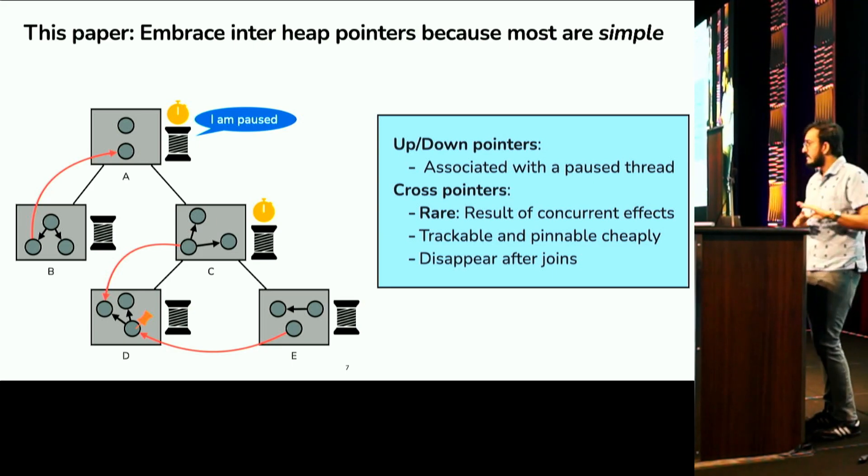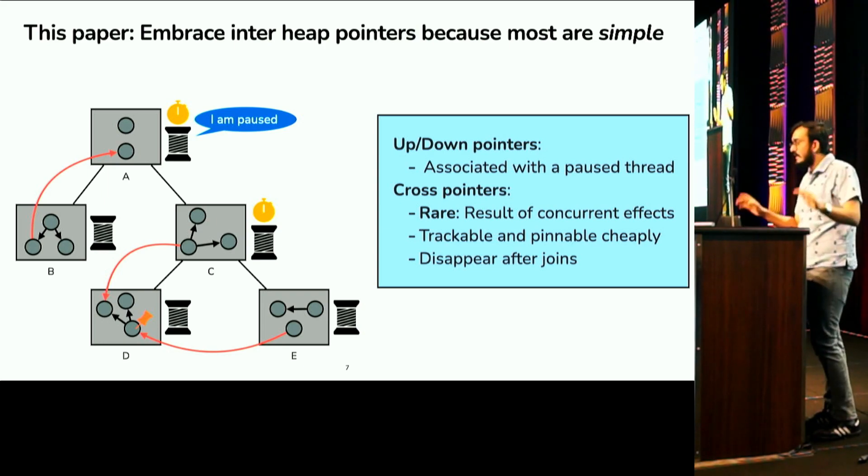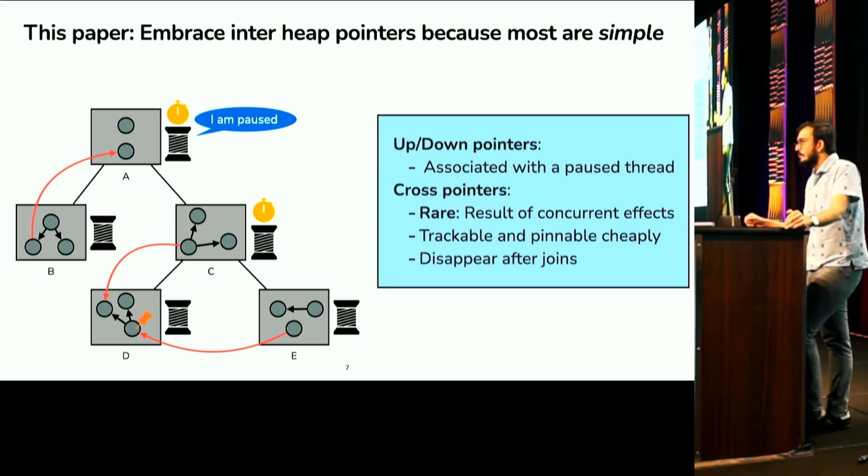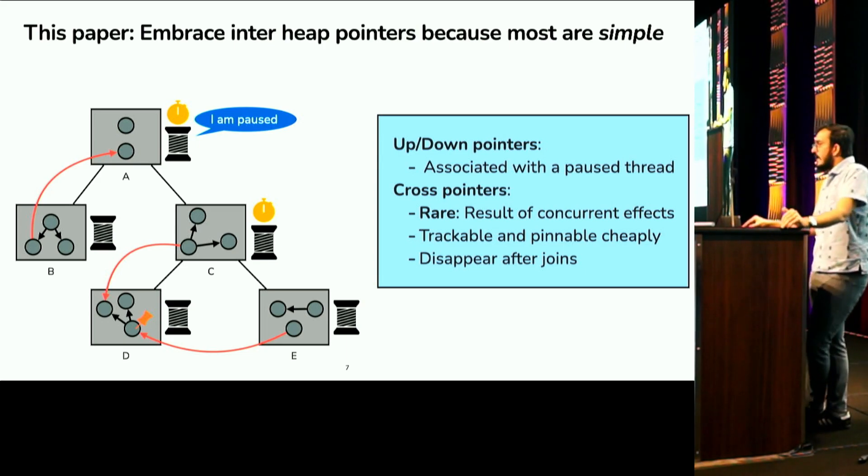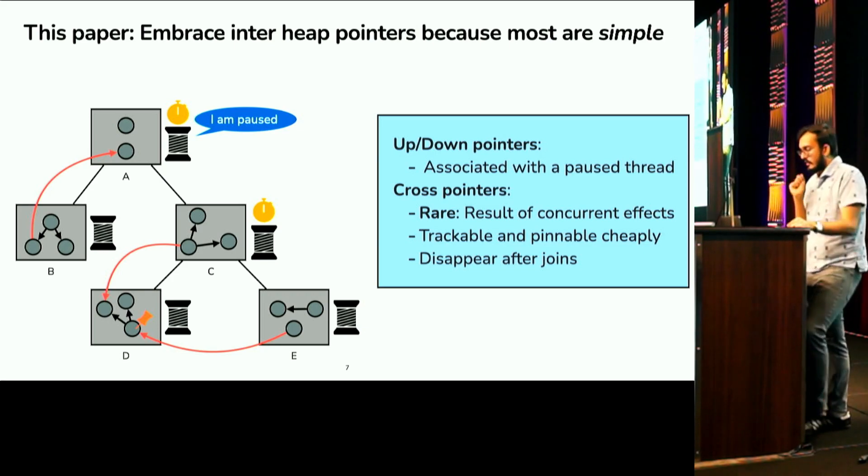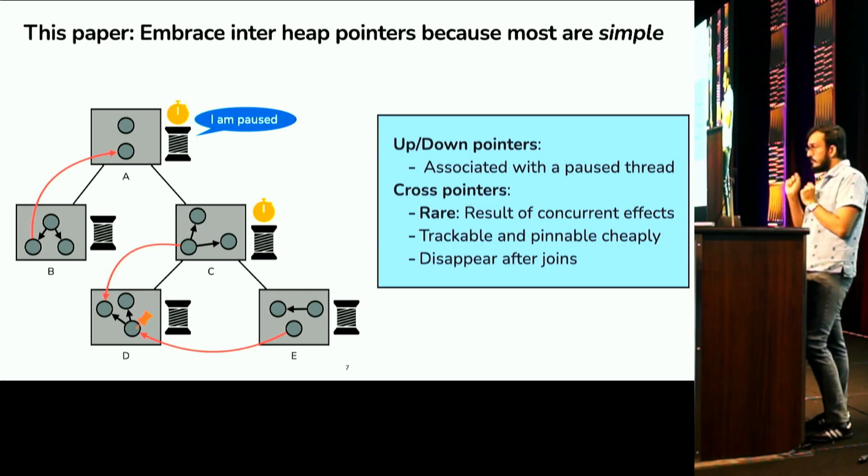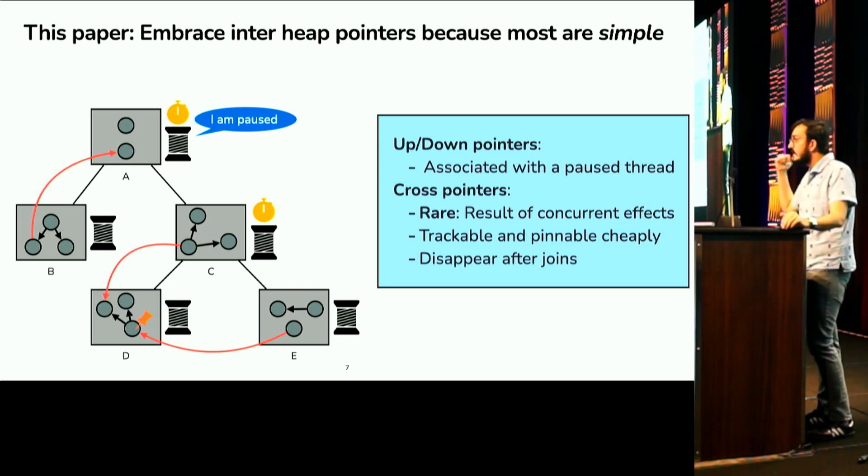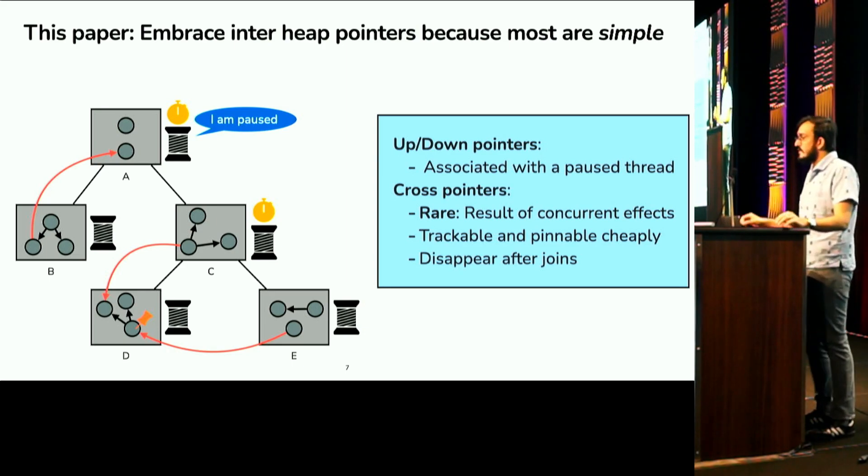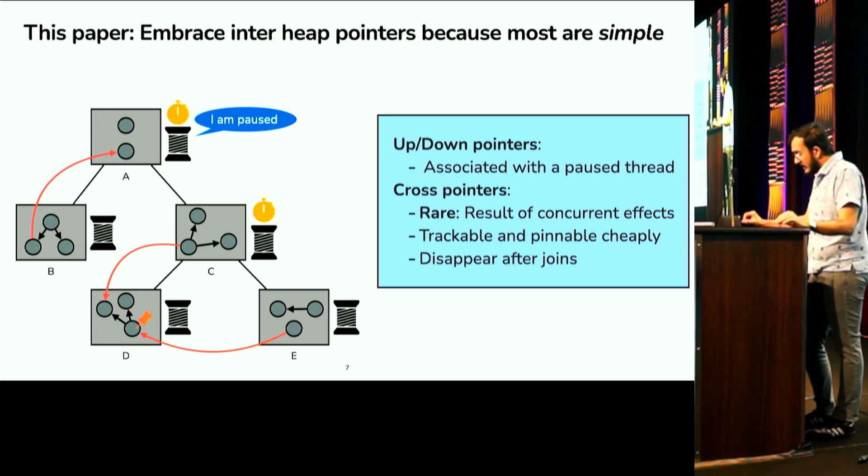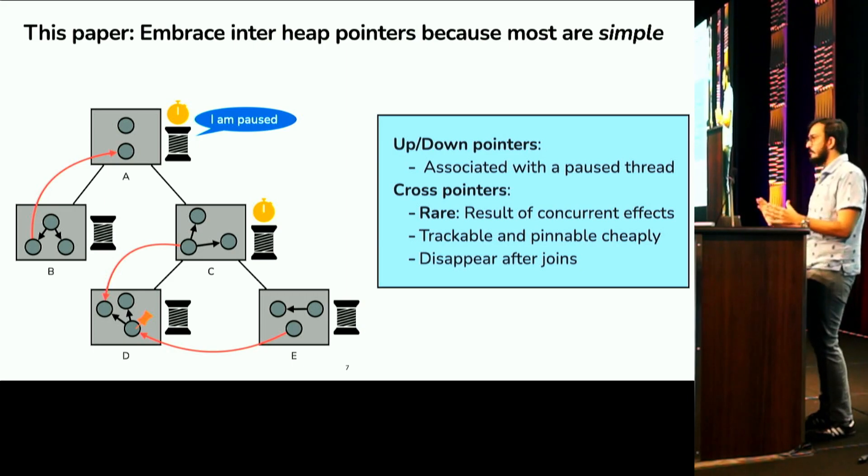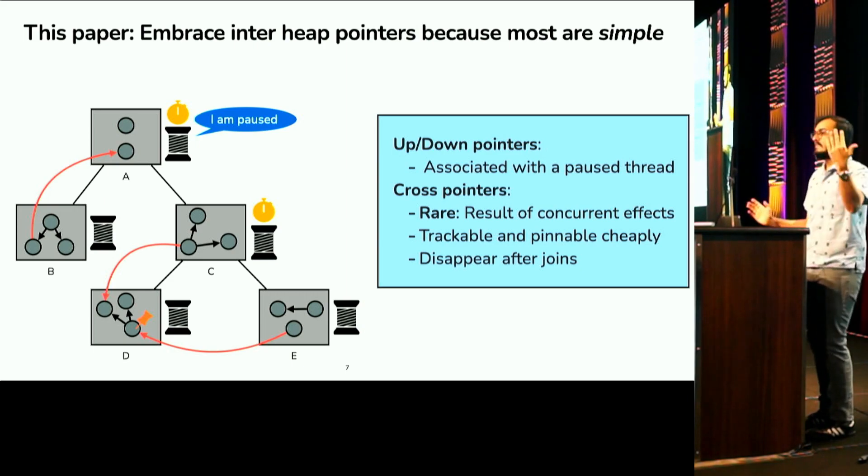So, most objects in this hierarchy basically do not have cross pointers. And then what we do in Maple is we track these cross pointers using read barriers. And then we pin the target, so in order to deal with them, we pin the target object of the cross pointer. So, just the thumb pin on this box D, shows that the target object of the cross pointer is pinned. The idea is now when a thread wants to collect its heap, it looks at the objects in the heap. It looks at which of them are pinned, does not move them, while it normally garbage collects the other objects.